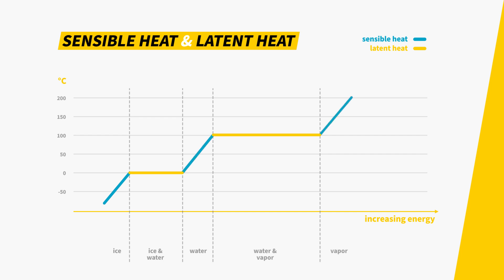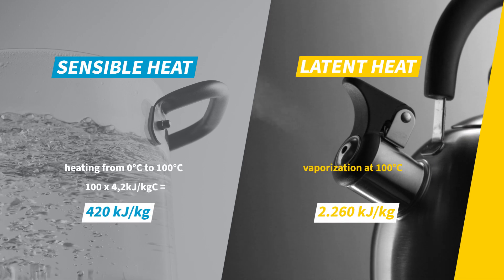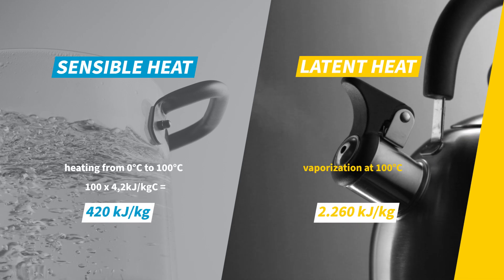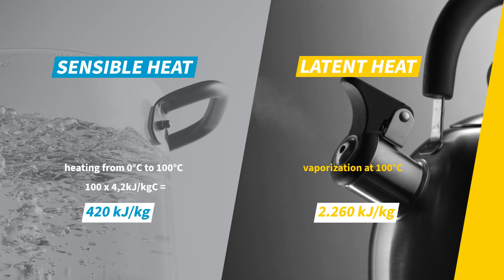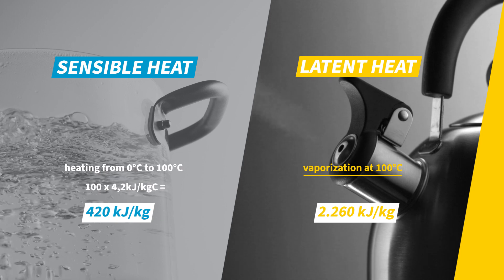This graph shows the different stages at which sensible and latent heat come into play when heating up water. During the phase changes — when ice turns into water and when water turns into steam — the temperature does not change. All the energy is then used to separate the molecules from each other.